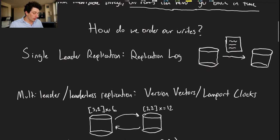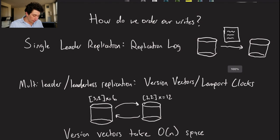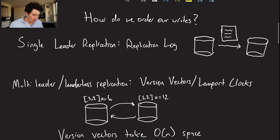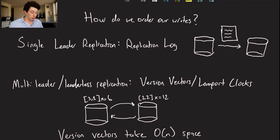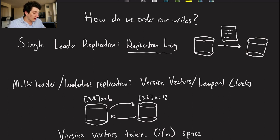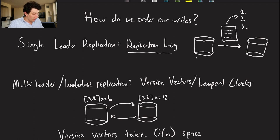So how do we actually order our writes? Let's look at a few examples. Starting with single leader replication: the way that we order our writes within our nodes is a replication log. The replication log says we've got write one, write two, and write three, and you send that replication log from the leader to the followers. By doing so, the leader and all the followers — all nodes in our cluster — agree on the order of all the writes.